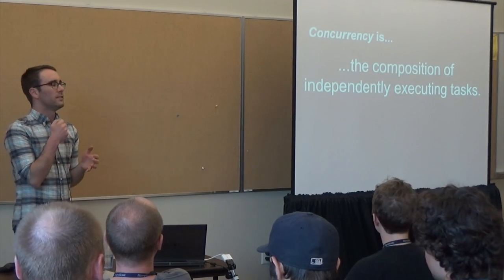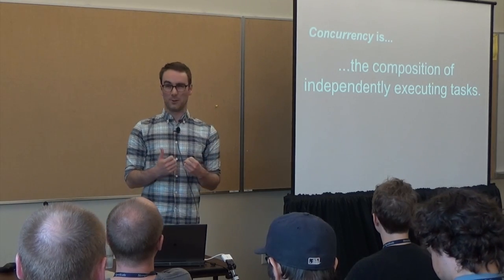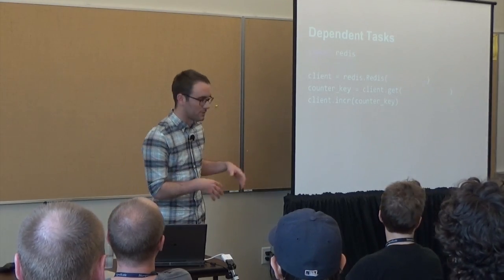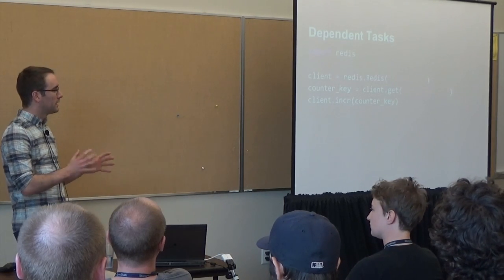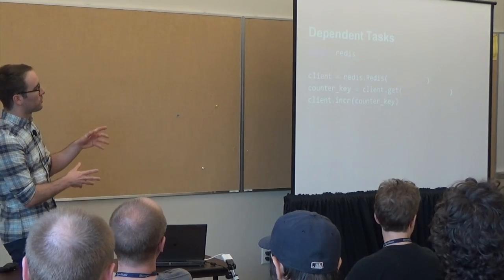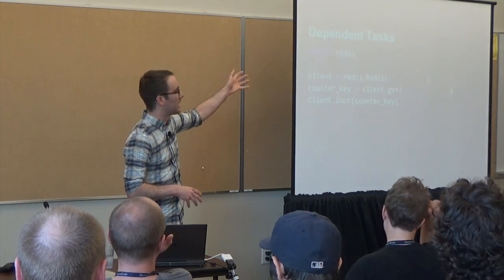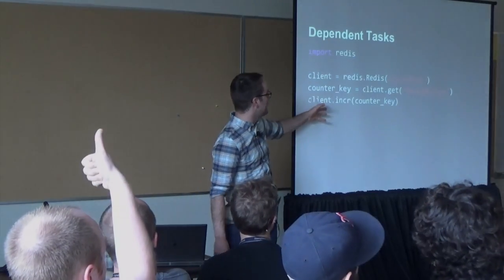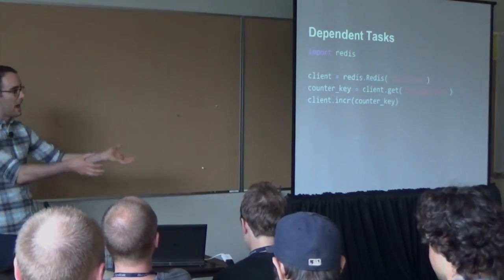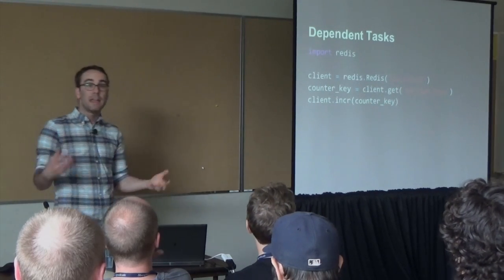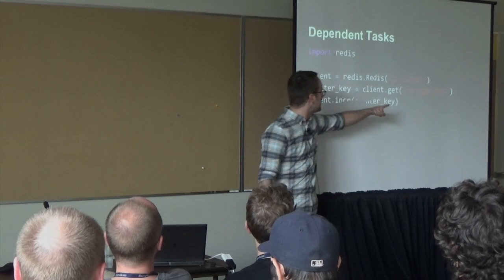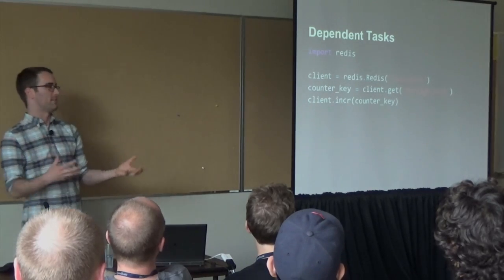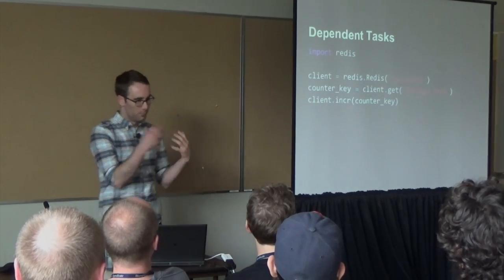Concurrency is the composition of independently executing tasks. If you've used Redis, here's a little sample code — hopefully anybody can understand what's going on. We have some database, we get a connection to it, we have clients, and then we increment a counter on a value we got back. These are dependent tasks: we have to get a foreign key before we know what key to increment. You can't run them at the same time.